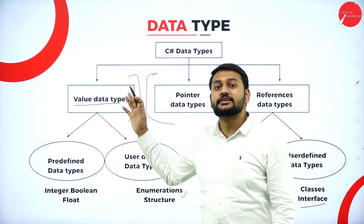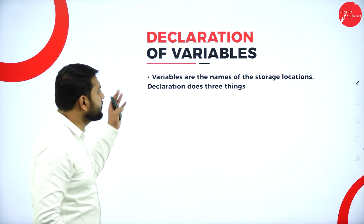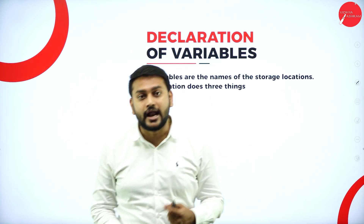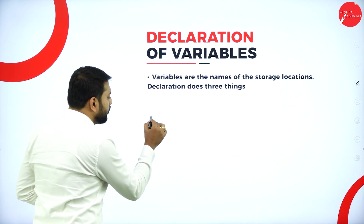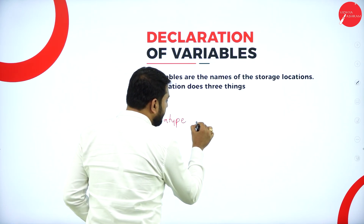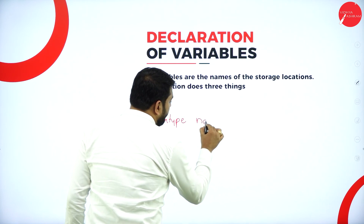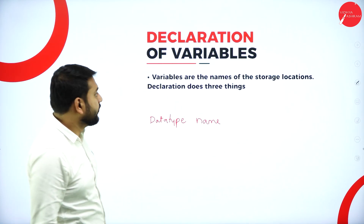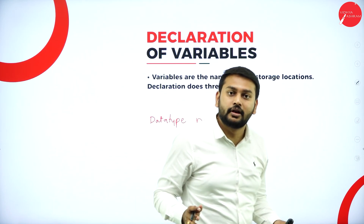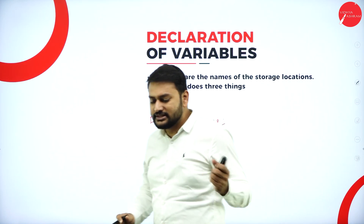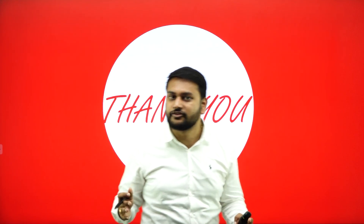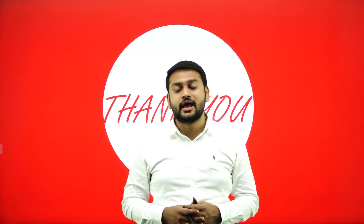The last topic for today is the declaration of variables. When declaring a variable, you need to remember two things: first, mention the data type; second, provide the name of the variable. That is the syntax to declare any variable in C#. This concludes today's session — in the coming session I have many more interesting topics to discuss. Till then, happy learning, take care.